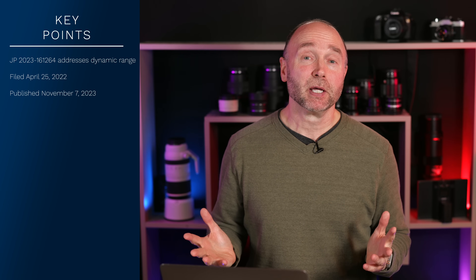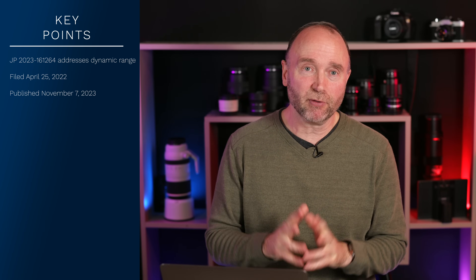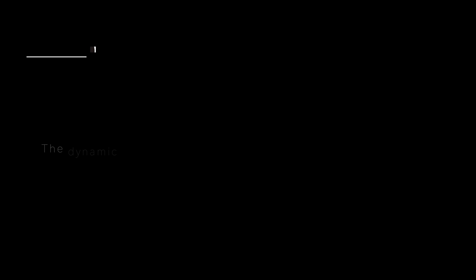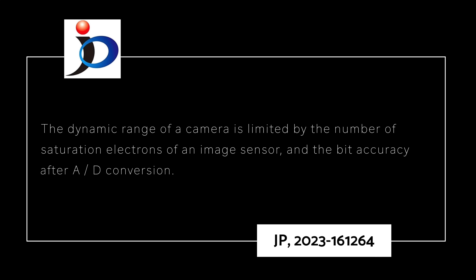I know what you're thinking — this patent application problem statement has nothing to do with increasing dynamic range. In fact, it's rather nebulous. But if we dig down a little bit further into the patent application, in the detailed description under paragraph 2, Canon says that the dynamic range of a camera is limited by the number of saturated electrons of an image sensor, and of course the bit density after AND conversion.